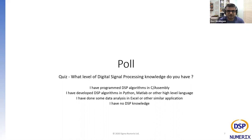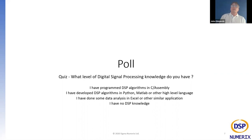Ravi asks whether the talk is arguing for bringing in more domain knowledge rather than using many layers. John confirms that's a great question that leads directly into the talk, noting it will be addressed in a few slides. The poll results show 33% of the audience have programmed DSP algorithms in C or assembly, 25% have developed DSP algorithms in Python, MATLAB, or other high-level languages, 23% have done data analysis in Excel or similar, and about 20% said they have no DSP knowledge.